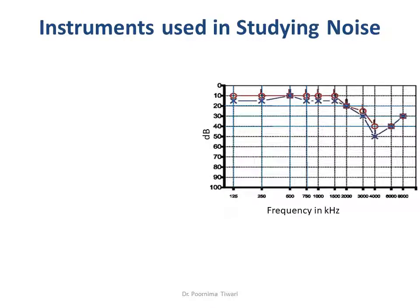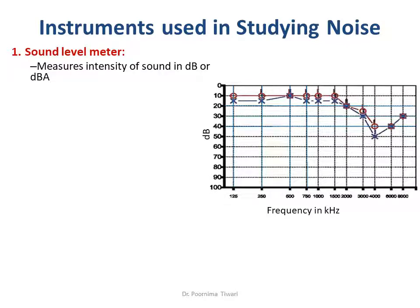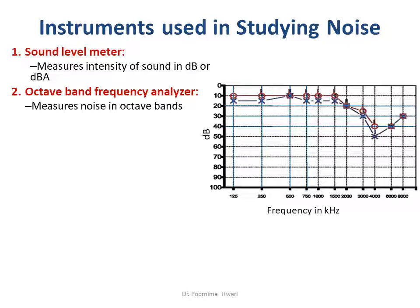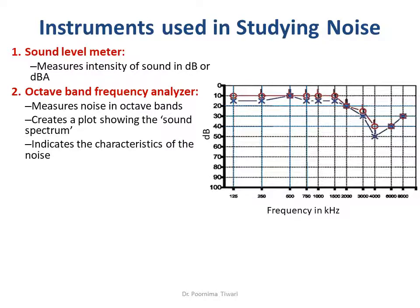A brief about some instruments used in the study of noise. The sound level meter measures the intensity of sound in either decibels (dB) or dB(A). The octave band frequency analyzer measures noise in octave bands — since noise is a mixture of different pitches, it creates a plot showing whether the sound spectrum is mainly high pitch, mainly low pitch, or variable.